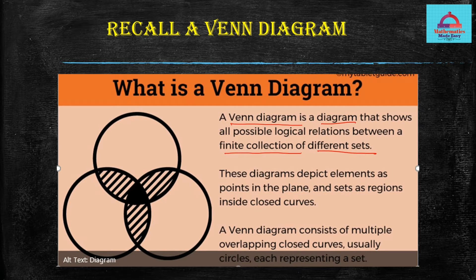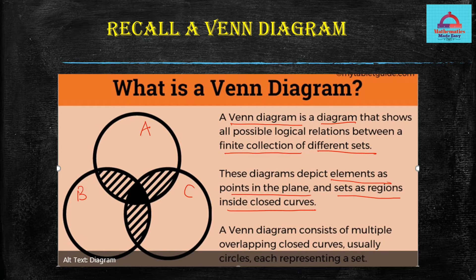In the image shown here there are three sets — set A, set B, and set C. These three sets are intersecting, as you can see, and there are some common parts and boundaries. You can very well see the logical relation between these three sets. These diagrams represent elements as points in the plane and the sets as circular regions. Sometimes a Venn diagram will have multiple overlapping closed curves, usually circles, which represent each set.